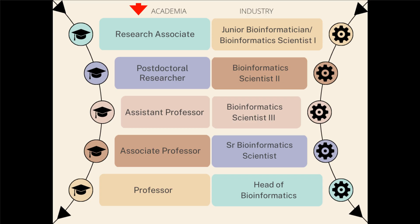Now let's talk about career advancement and career paths in academia versus industry. In academia, the career path looks something like this: you start as an undergraduate or postgraduate student. Without a PhD you can go straight into academia as a research assistant, or you can continue to get your PhD. After your PhD, you can work as a research associate or postdoctoral researcher — these are essentially the same thing — after which you can go on a professor track.